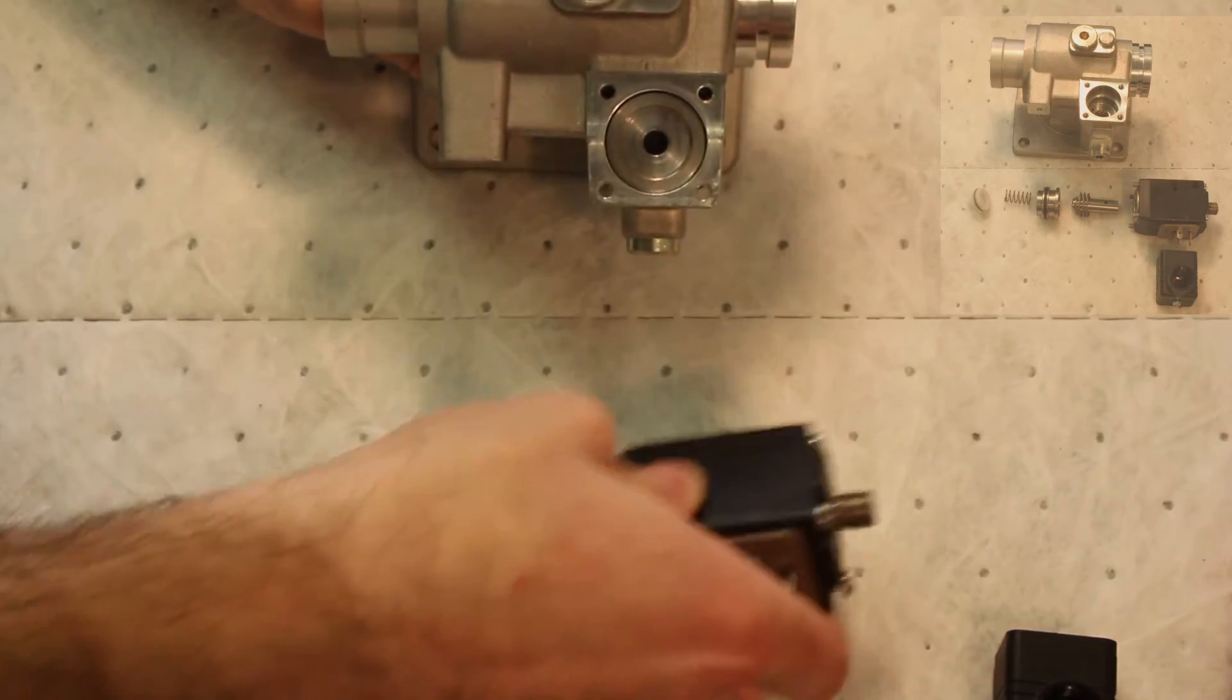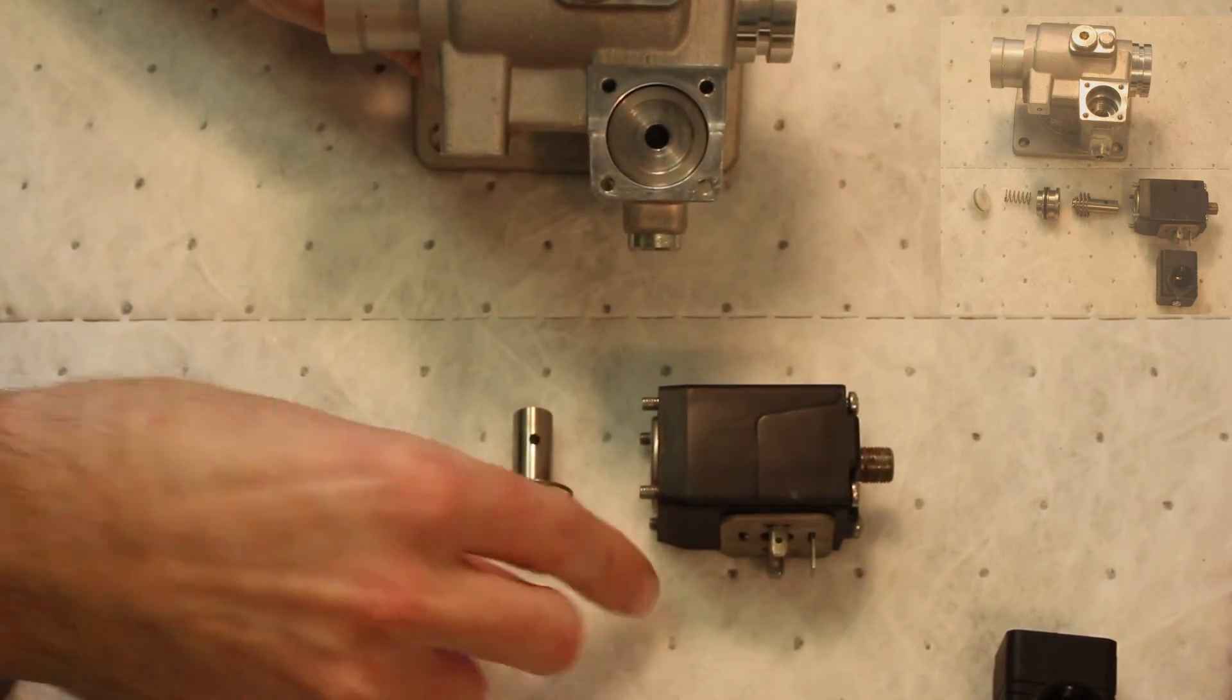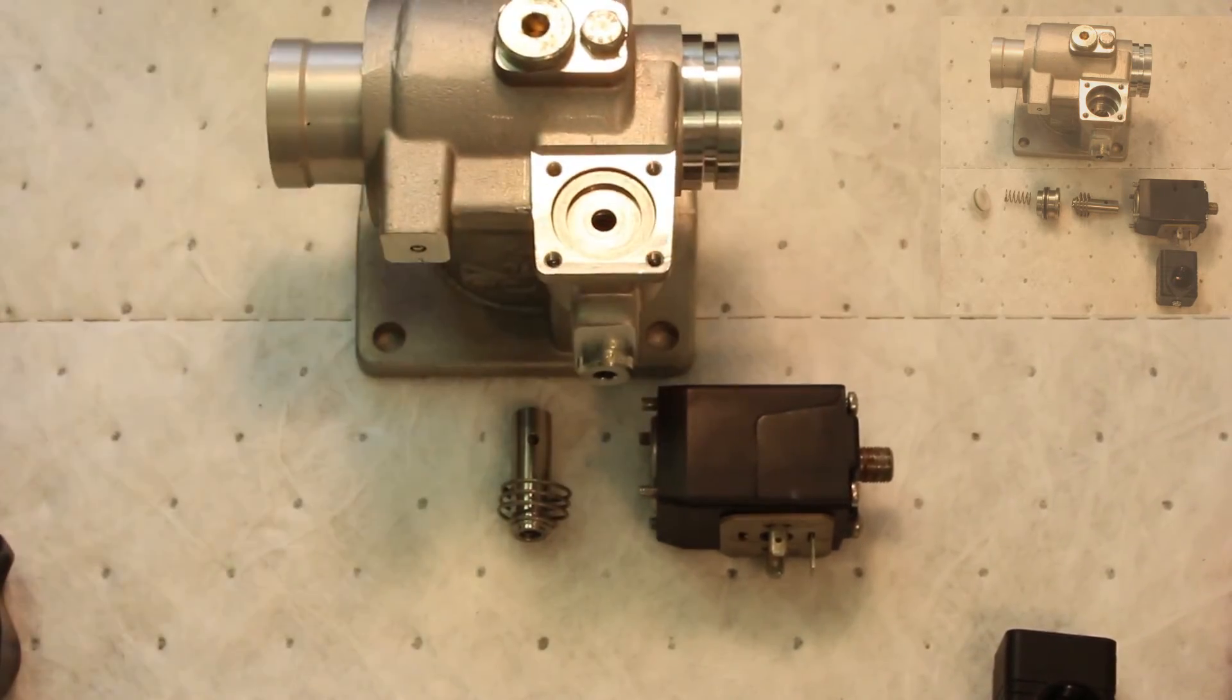The solenoid valve can now be removed from the compressor. Be careful as you lift the valve, the solenoid anchor is loose inside and may slide free of the valve body.